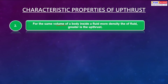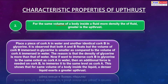Second, for the same volume of a body inside a fluid, the greater the density of the fluid, the greater will be the upthrust. For example, place a piece of cork A in water and another identical cork B in glycerin. Both float, but the volume of cork B immersed in glycerin is smaller than that of cork A in water, because the density of glycerin is more than that of water. If we want to immerse cork B to the same extent as cork A, an additional force is required. This shows that a denser liquid exerts a greater buoyant force.